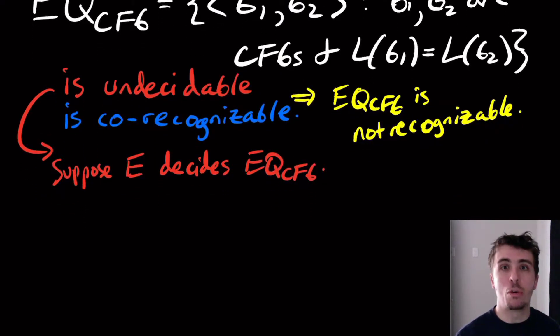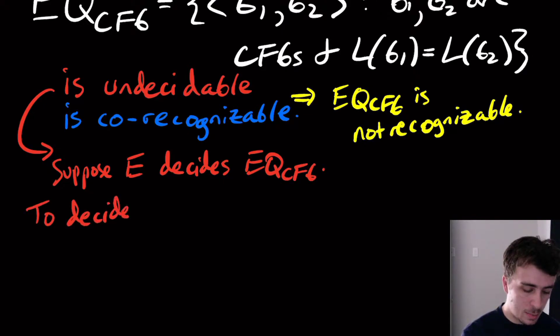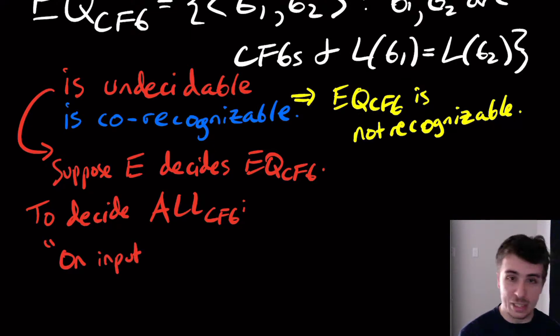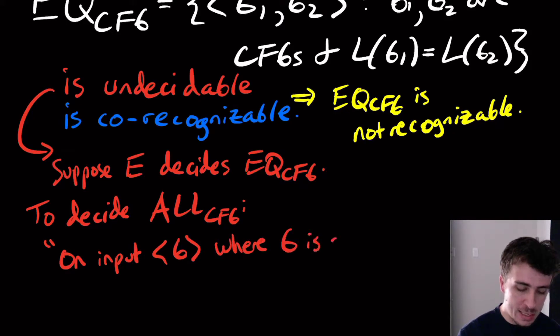Then what we'll do is we'll be able to decide the universality problem. So to decide the all problem, remember the all problem takes as input a single CFG, not two. So let's say we have G here where G is a CFG, just like always.